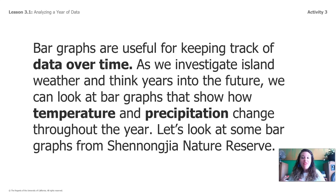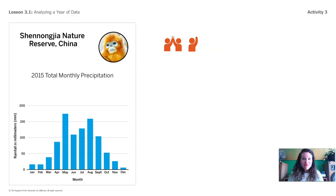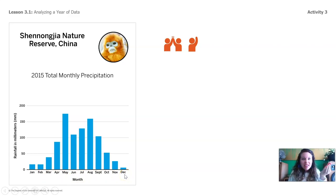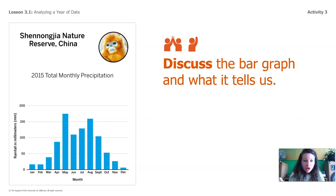Bar graphs are super useful for keeping track of data over time. As we investigate island weather and think years into the future, we can look at bar graphs that show how temperature and precipitation change throughout the year. For some more practice, let's look at some bar graphs from Shenangia Nature Reserve in China. Across the x-axis on the bottom, the months are listed — so we're seeing every single month. The y-axis shows us the rainfall in millimeters, so we're seeing a year's worth of rainfall broken down by month.